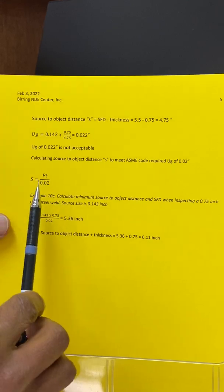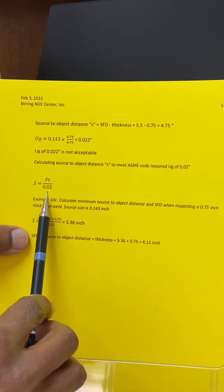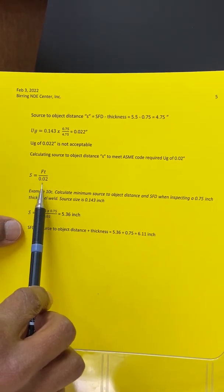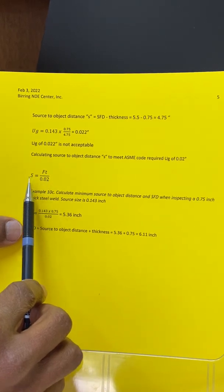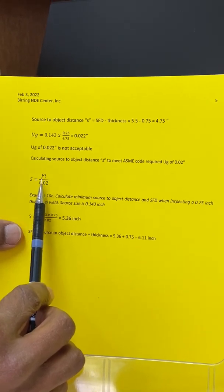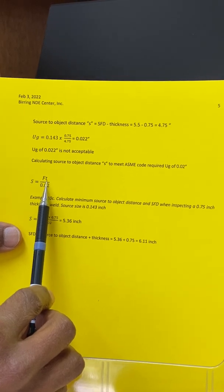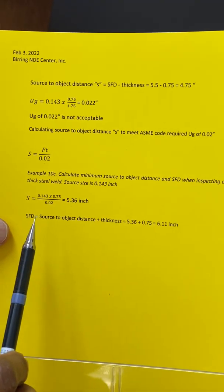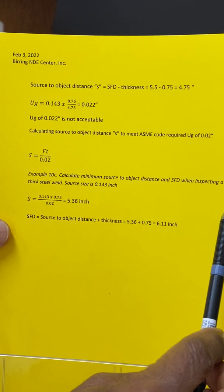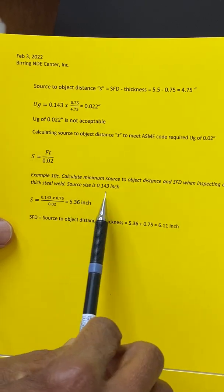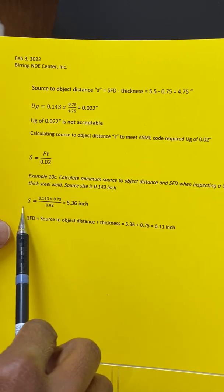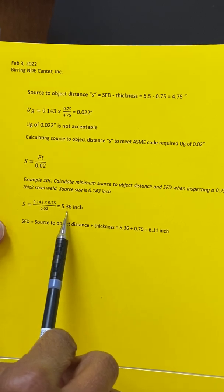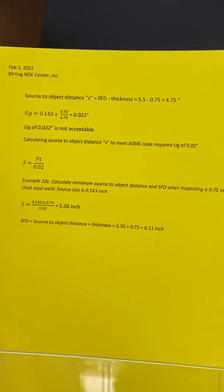So s equals to ft divided by 0.02, and that would be the distance at which we will get geometrical unsharpness of 0.02 inches. The source to the object distance equals the source size times the thickness of the component. Here is an example. It shows you that if the plate thickness is 0.75 inches and the source size is 0.143 inches, then the source to the object distance should be at least 5.36 inches. If it is more than that, that's even better.